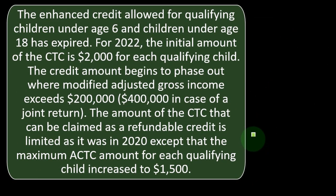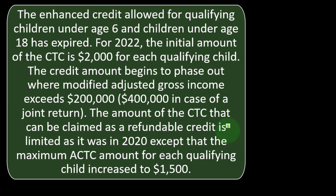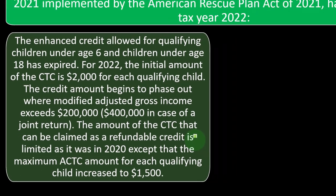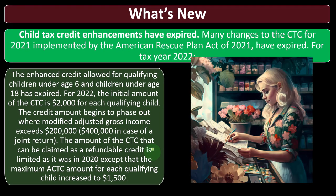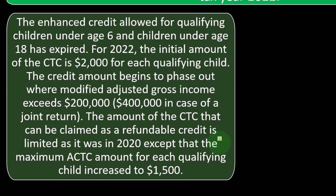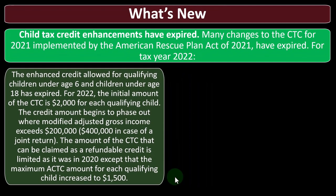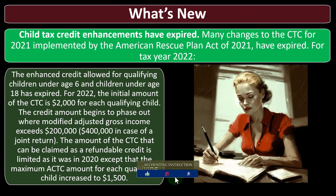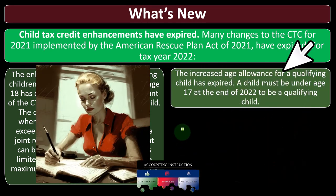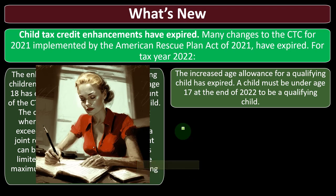The amount of the CTC that can be claimed as a refundable credit — the additional child tax credit, or ACTC — will give a benefit even if tax liability is zero, though it's limited as it was in 2020, except that the maximum ACTC amount for each qualifying child has increased to $1,500. The increased age allowance has expired; a child must be under age 17 at the end of 2022 to be a qualifying child.